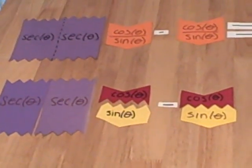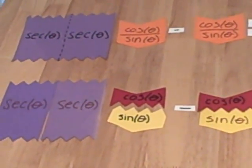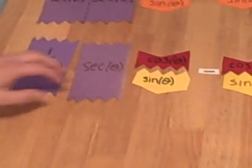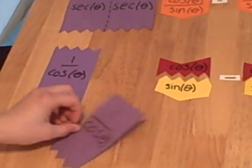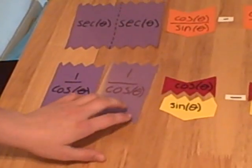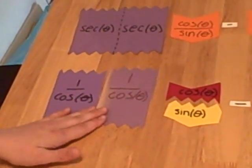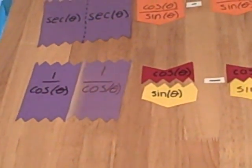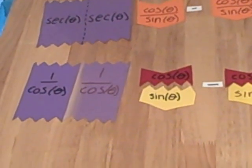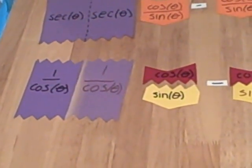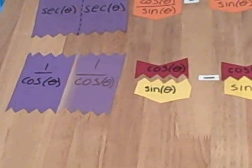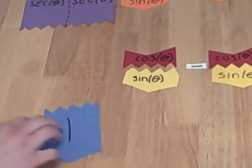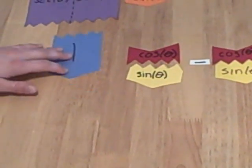Looks like we're making progress. Now we want to look at our secants. If we flip over each of those, we see that secant is one divided by cosine. Since these are both fractions being multiplied together, we can multiply the numerators and the denominators, and we will end up with one divided by cosine times cosine. So let's switch that out.